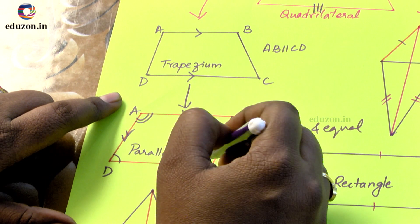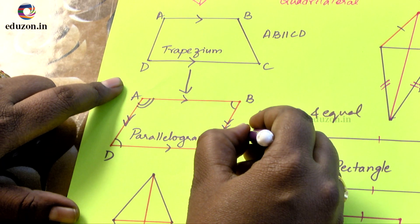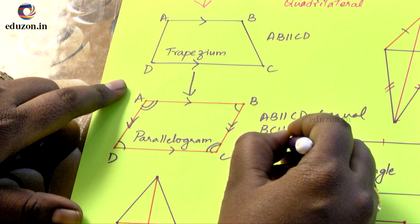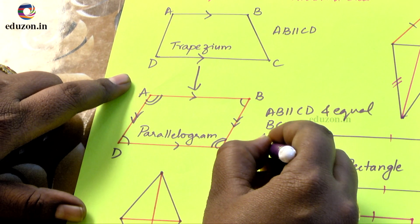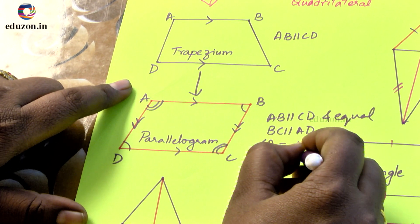Now coming to the opposite angles, they are also equal. So I can write angle A is equal to angle C and angle B is equal to angle D.